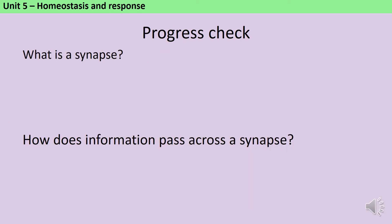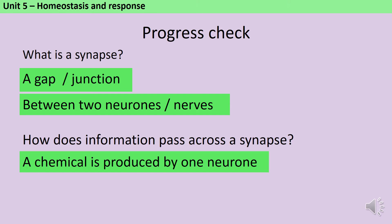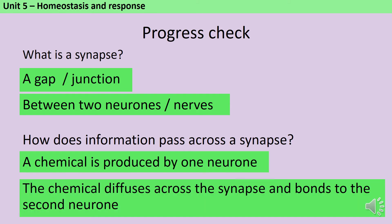Pause the video and make sure that you can write down what we mean by a synapse and how information passes across a synapse. A synapse is a gap or a junction between two neurons, and what happens is that the first neuron produces a chemical that we call a neurotransmitter, and this then diffuses across the synapse, across the gap, and it bonds to the second neuron, triggering a new electrical impulse.